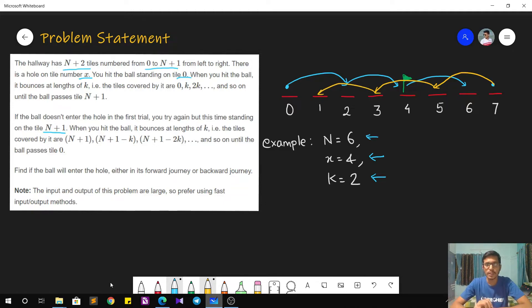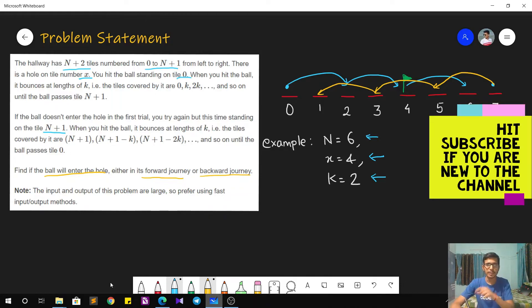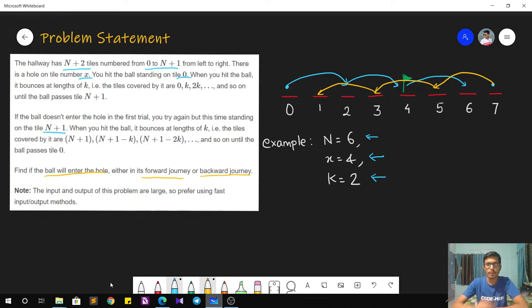Now what is the question? We are asked whether the ball will ever enter the hole either in its forward journey or the backward journey. First we play from left to right. If in that play the ball enters the hole, the answer will be yes. If not, we will also try to shoot the ball from the rightmost end, that is from tile number n plus 1. If in that also the ball does not enter, then the answer is no. So we have to check both forward and backward journey. If in either of them the ball enters the hole, the answer is yes, or else the answer is no.